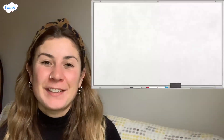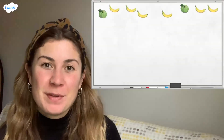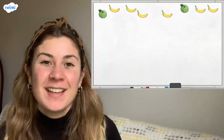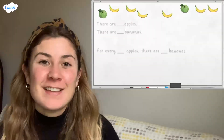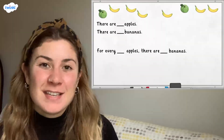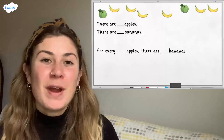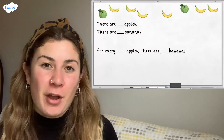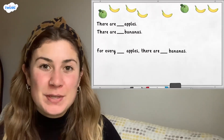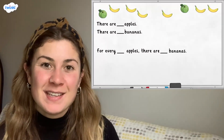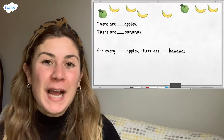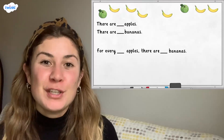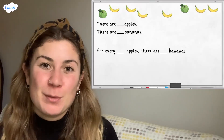Now it's your turn. Here we have some apples and bananas. Can you fill in the stem sentences and describe the ratio of apples to bananas in two different ways? If you've got counters, you could use these to help you as well.